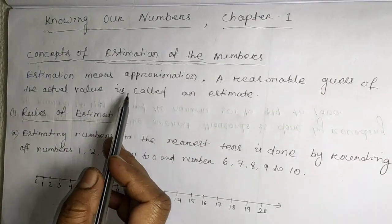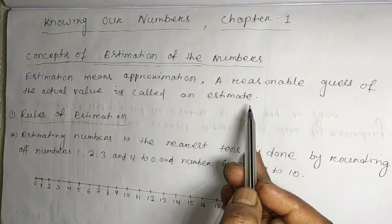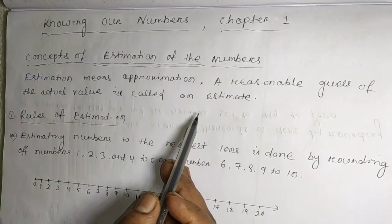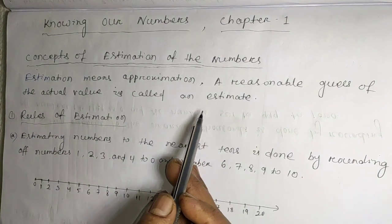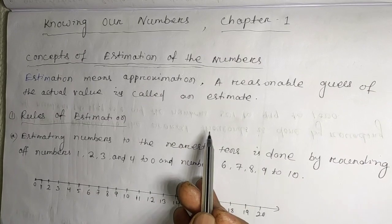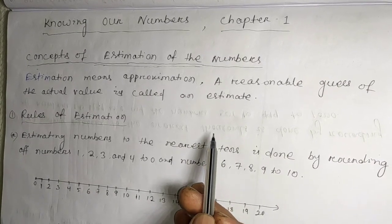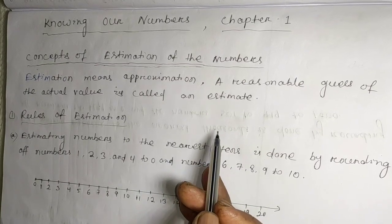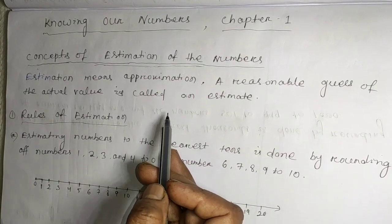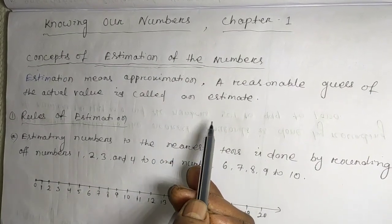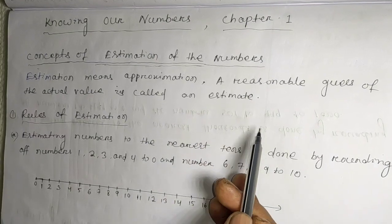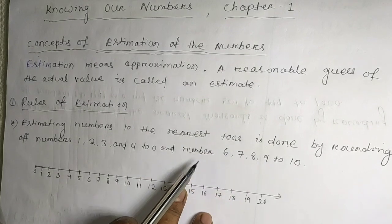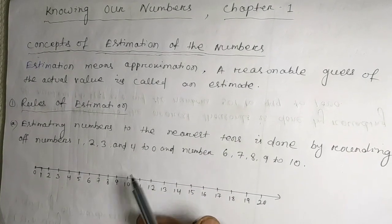Estimation means approximation. A reasonable guess of the actual value is called an estimation. The number which is nearly but not exactly right is called an estimate. A number can be rounded to its nearest or closest value.